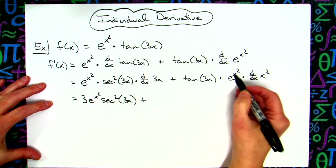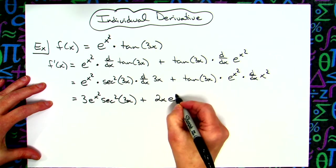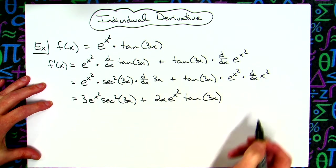So we'll put this in the front, and we'll also put this in the front. So I'll put that 2x in the front. We'll have the e raised to the x squared, and then we'll have the tangent of 3x.